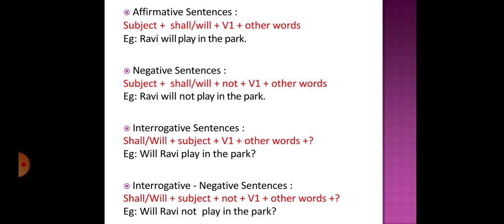Now let's look at the sentence structure of an affirmative future tense sentence. It goes: subject plus shall/will, plus verb in the first form, plus other words. We use 'shall' with 'I' and 'we', and 'will' with 'you', 'he', 'she', and 'they' — just stick that in your mind. For example: 'Ravi will play in the park' — Ravi is the subject, 'play' is the first form of the verb. Another example: 'He will go to America next month.'